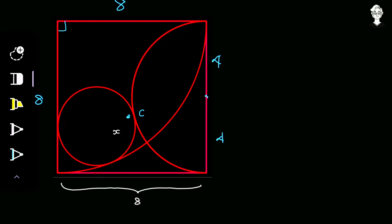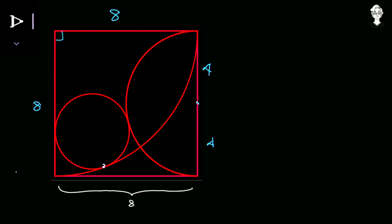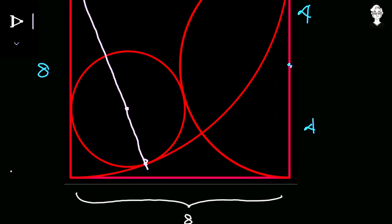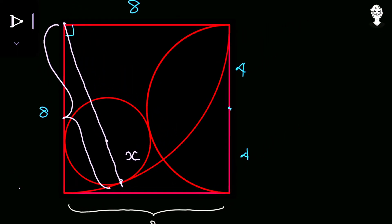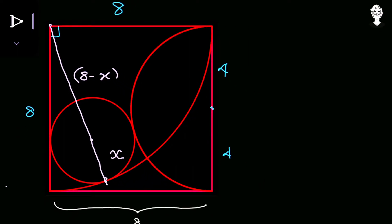Now applying these theorems: the complete circle and the quarter circle share a point of tangency. The center of the quarter circle, the point of tangency, and the center of the complete circle are collinear. From the center of the quarter circle to the circumference, the radius is 8. The center of the complete circle lies on this line, at distance X from the tangency point, so the remaining length from the quarter-circle's center to the circle's center is 8 minus X.